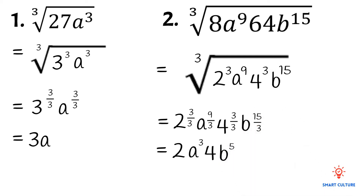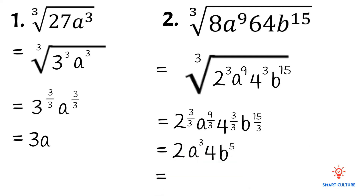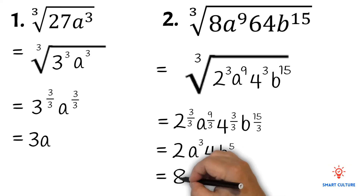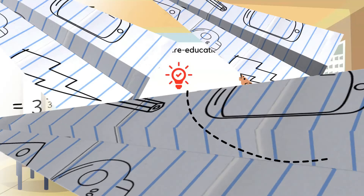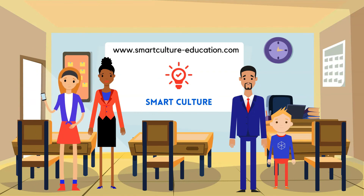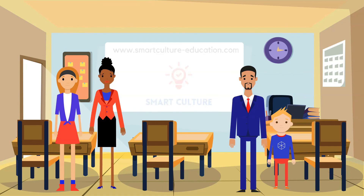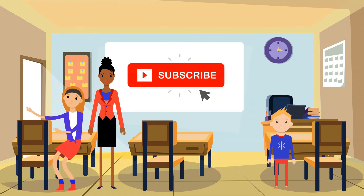The final answer is 8a to the power of 3, b to the power of 5 — since 2 times 4 equals 8. For online tutoring or additional resources, visit our website at www.smartculture-education.com. Subscribe below — it's easy. Thank you.